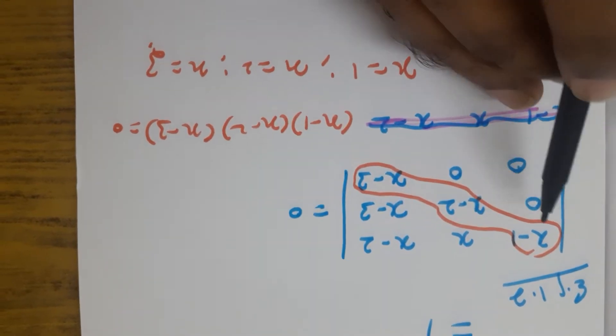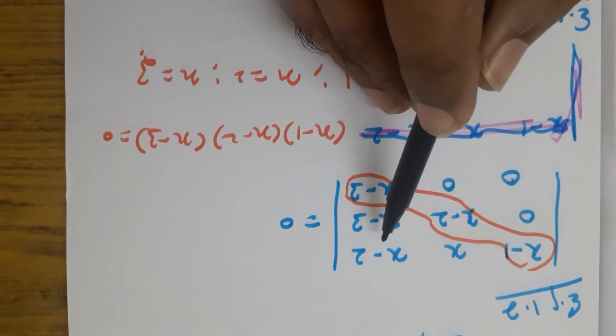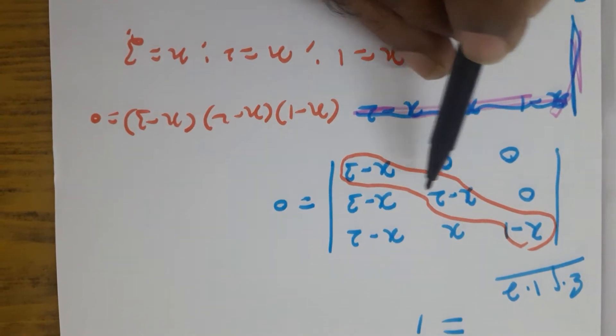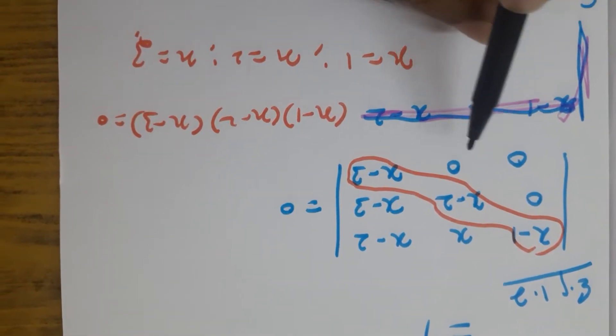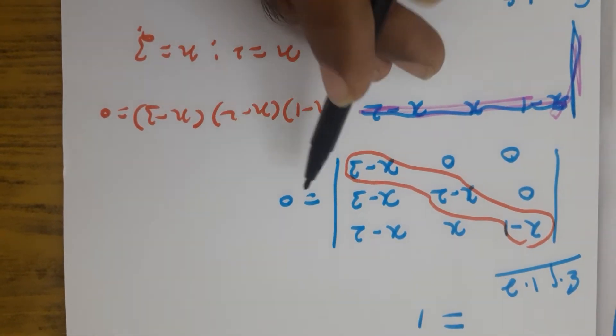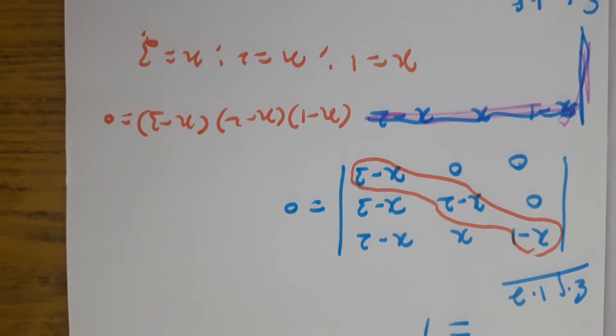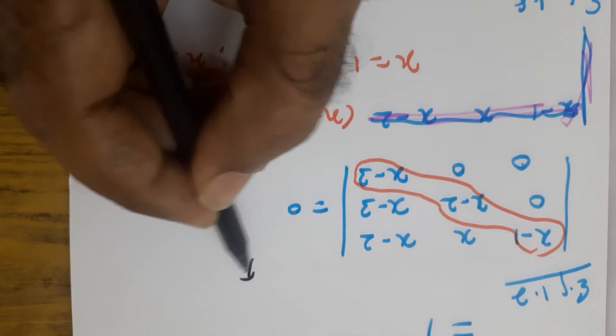The given problem is determinant of x minus 1, x, x minus 2, 0, x minus 2, x minus 3, 0, 0, x minus 3 is equal to 0. Find x value.